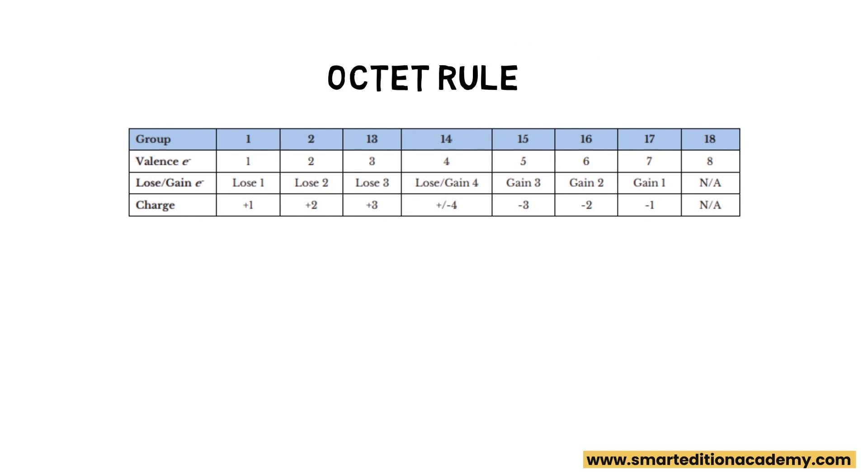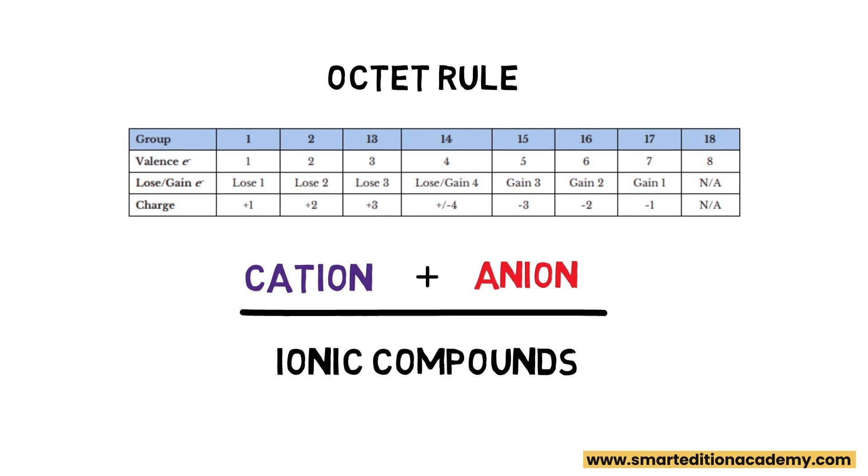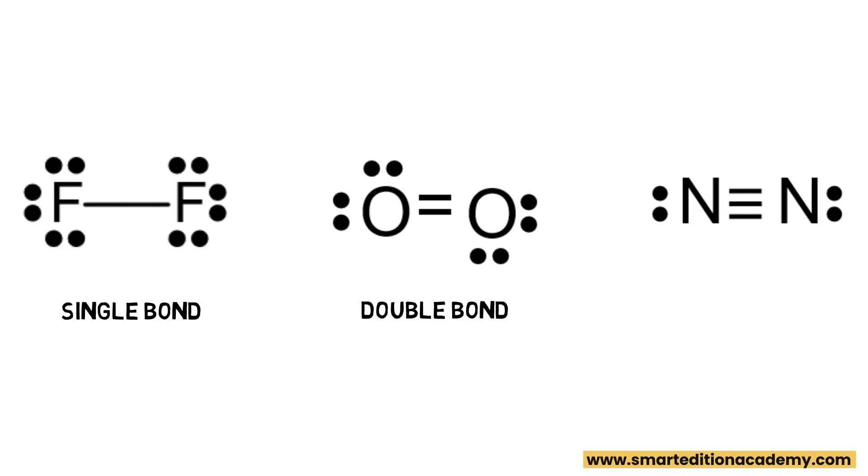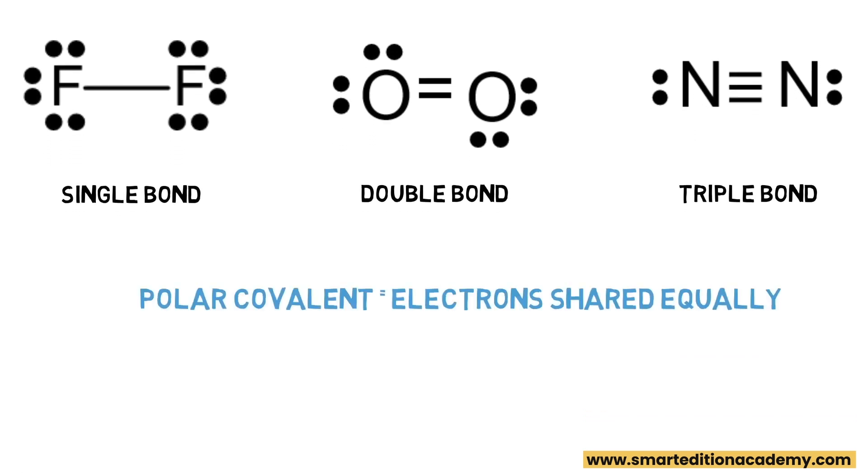When they gain or lose electrons, atoms become ions, and more specifically cations when they are positively charged from having lost electrons, which naturally carry a negative charge, or anions when they become negatively charged from gaining electrons. When elements combine together to do this, they are forming ionic compounds. Covalent compounds are when atoms share electrons, and may create single, double, or triple bonds to stabilize. Atoms will share electrons, but while they stabilize each other by filling out their outermost energy level, the electrons may not be shared equally, and will create electronegativity which may result in polar covalent bonds. If atoms are sharing the electrons equally, they will be considered nonpolar.